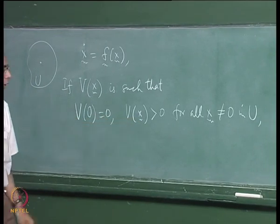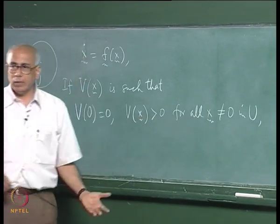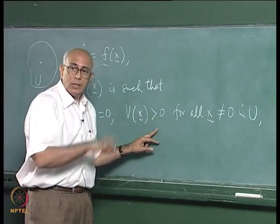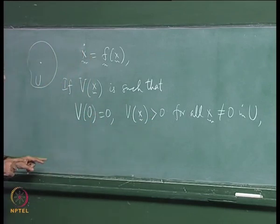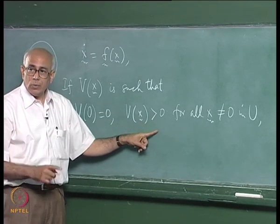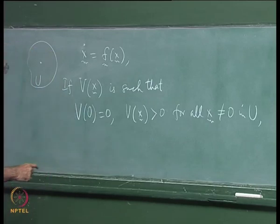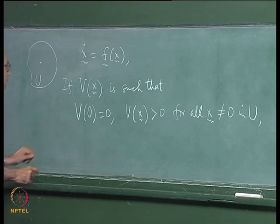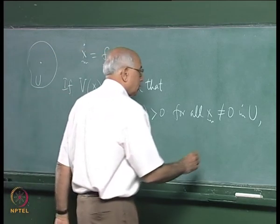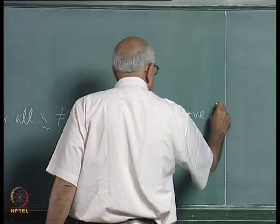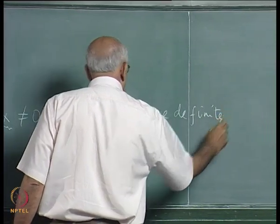If V(x) < 0 for all x ≠ 0 in U, it is a negative definite function. If V(x) ≥ 0 and you can find other zeros in the neighbourhood U, then it is positive semi-definite. If V(x) ≤ 0 and you can find other zeros, then it is negative semi-definite. With these definitions, the statements we made were the following.